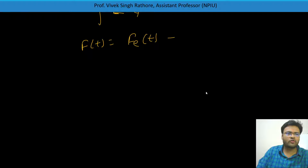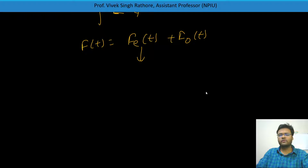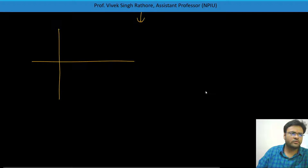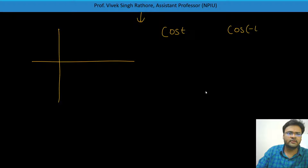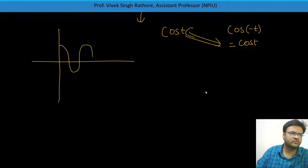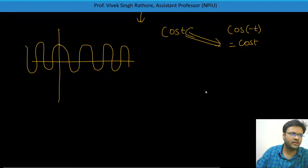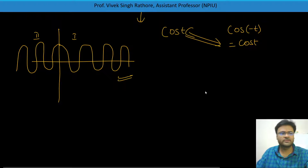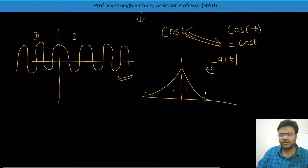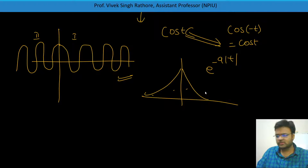F(t) equals the even part component plus odd component, and I told you how to calculate them. For some standard signals: cosine signal — cos(t). If you do cos of minus t, you get cos(t) only. So F(t) equals F of minus t, meaning cosine is even. Similarly, e to the power minus a times mod t is also symmetric in nature and is even.